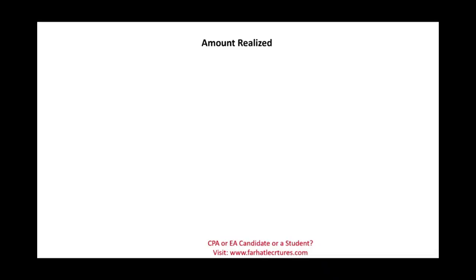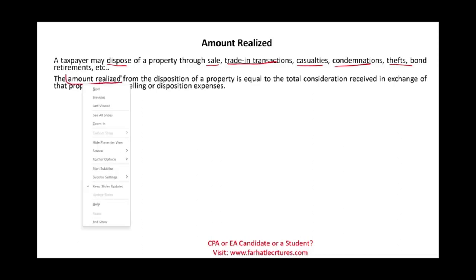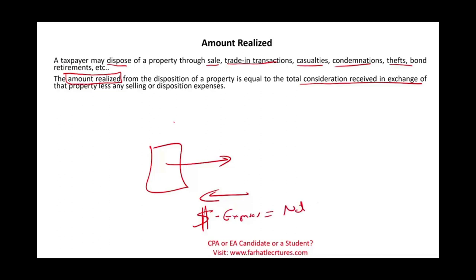A taxpayer may dispose — meaning sell — a property through sale, trade-in transaction, casualties, condemnation, theft, bond retirement, and so on. When you dispose of something, the amount realized — the amount you receive from the disposition — should equal the total consideration received in the exchange. The consideration minus expenses you incur equals the net sales amount.